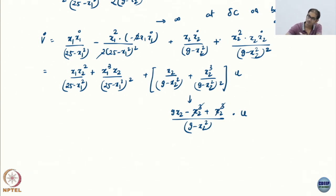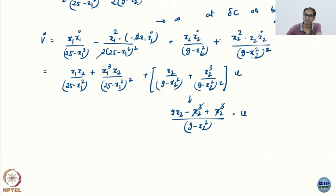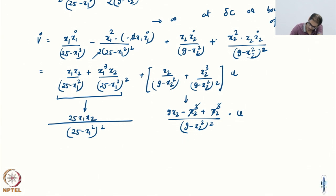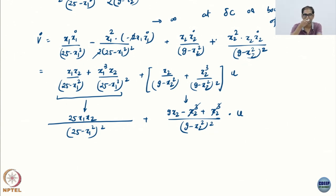Correcting the computation: the first term is x1·x2 (not x2 squared), and similarly the x1 terms reduce over (25 - x1²)² giving 25·x1·x2 in the numerator. The expression is messy but the key structure is: a drift term in x1·x2 plus a coefficient times u, where that coefficient involves (9 - x2²) in the denominator.